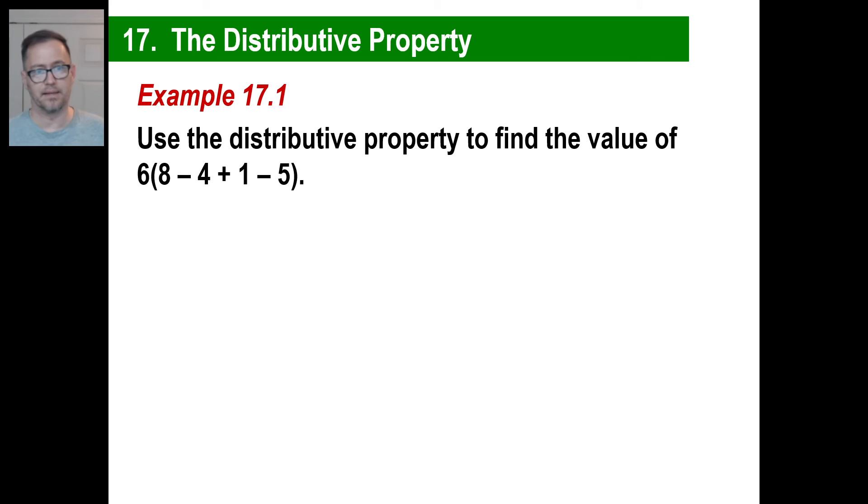If you want to go ahead and pause and copy and try this out and see what you get for yourself, give it a whirl. Well, I'm just going to say the answer first. 8 minus 4 is 4, 4 plus 1 is 5, 5 minus 5 is 0. So 6 times 0, the answer is 0. Let's just prove it by using the distributive property. 6 times 8 is 48, 6 times negative 4, negative 24, 6 times 1 is 6, 6 times negative 5, negative 30. 48 minus 24 is 24, plus 6 is 30, minus 30 is, look at there, we proved it works. Since it works for numbers, it works for variables as well. Pause and copy. Give this a shot. And when you're finished, unpause it.